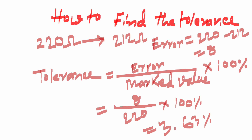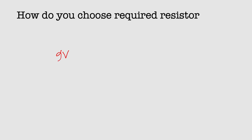That's how you can find the tolerance. Now, how do you choose your required resistor value for a specific circuit diagram? For example, you have a 9-volt battery and you want to connect an LED. This LED can take only 20 milliampere.